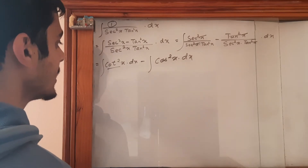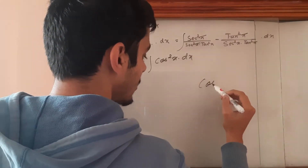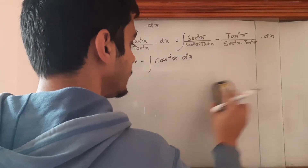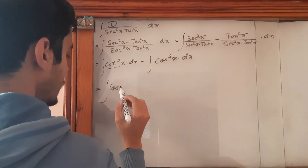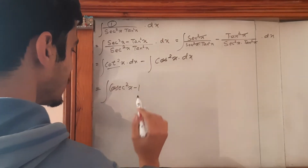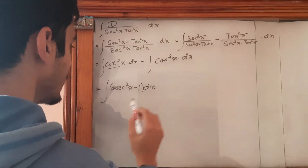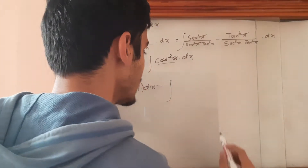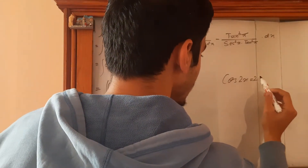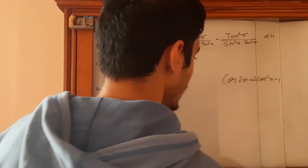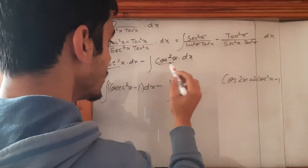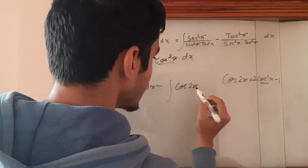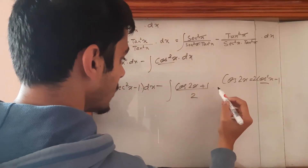Now, cot square x can be written as cosec square x minus 1. And cos square x can be changed using the relation cos 2x equals 2 cos square x minus 1, so cos square x equals cos 2x plus 1 upon 2.